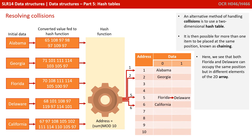An alternative method of handling collisions is to use a two-dimensional hash table. It is then possible for more than one item to be placed at the same position, known as chaining. Here we see that both Florida and Delaware can occupy the same position but in different elements of our 2D array.